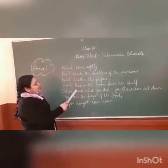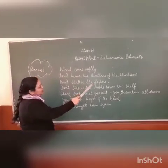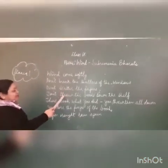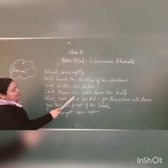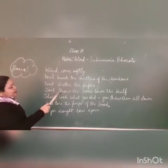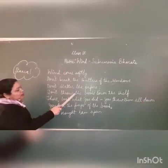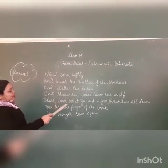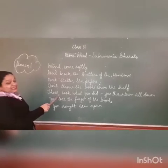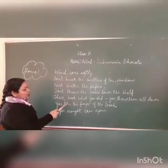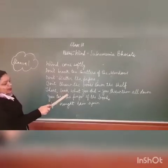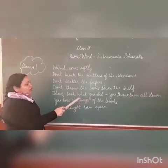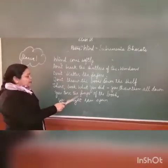See what the wind has done. It has broken the shutters of the window. It has scattered the papers — scatter means to spread here and there. Don't throw the books down the shelf. The wind has thrown the books down the shelf. Look what it did — you threw them all down. The books have been thrown from the shelf. You tore the pages of the books — tore is the past tense of tear, meaning tearing away. You brought rain again.